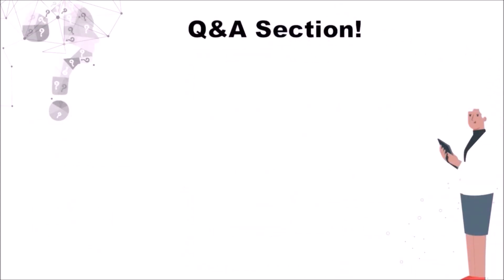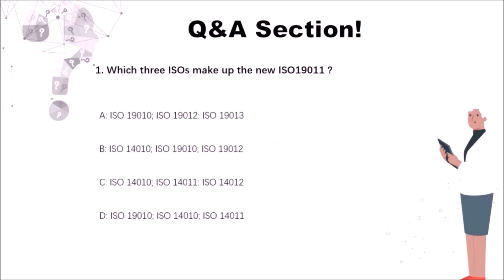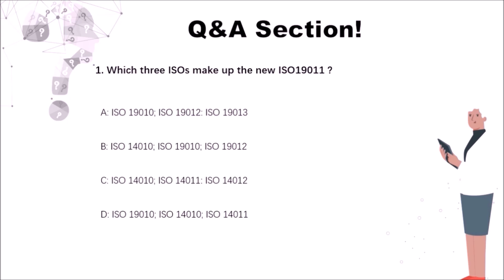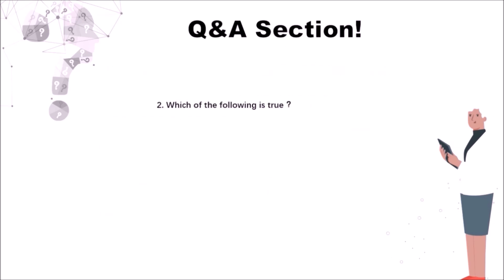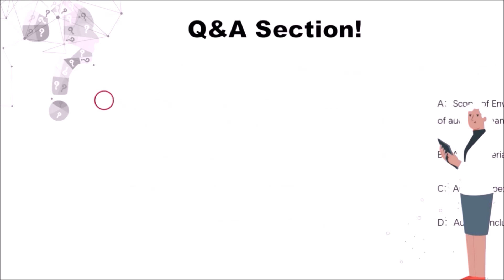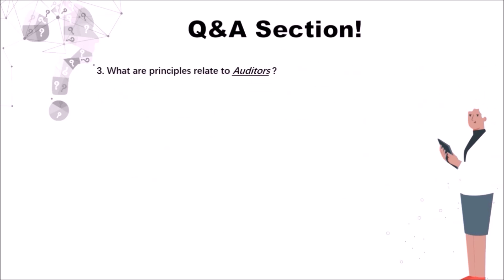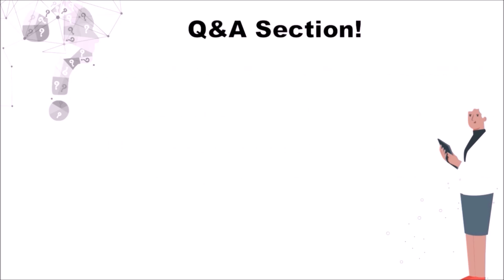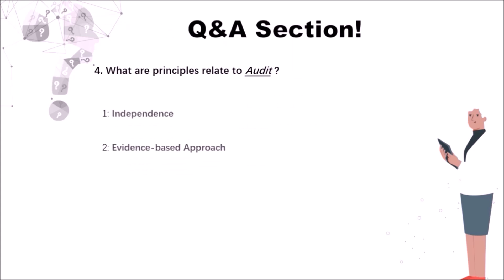Now we come to quiz time. We've prepared some simple questions on the contents. First, which three ISOs make up the new ISO 19011? The answer is C. Second, which of the following is true? The answer is A. Third, what are the principles related to auditors? The answers are ethical conduct, fair presentation, and due professional care. Finally, what are the principles related to the audit? The answers are independence and evidence-based approach. Thanks for following our second episode.